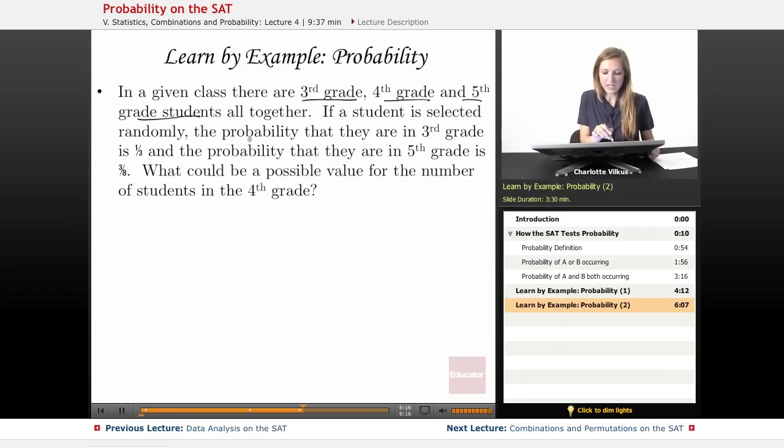If a student is selected randomly, the probability that they are in 3rd grade is 1/3, and the probability that they are in 5th grade is 3/8. What could be a possible value for the number of students in the 4th grade?